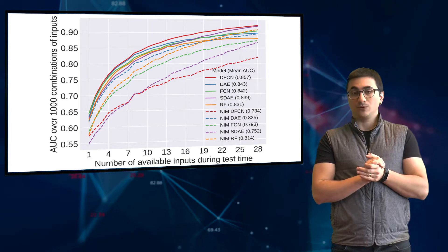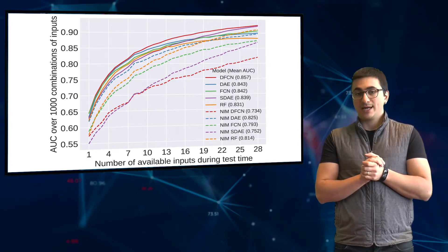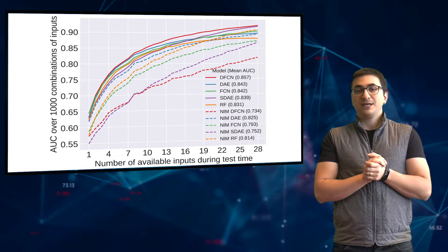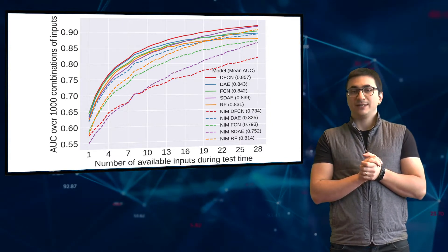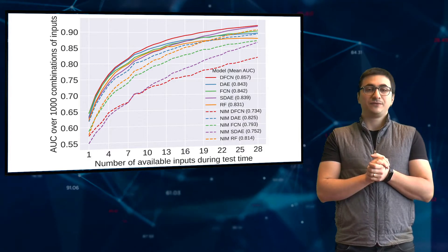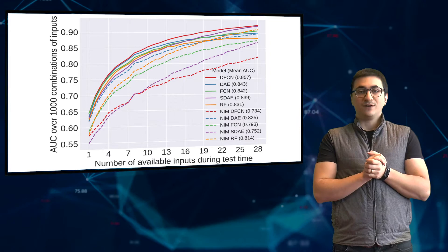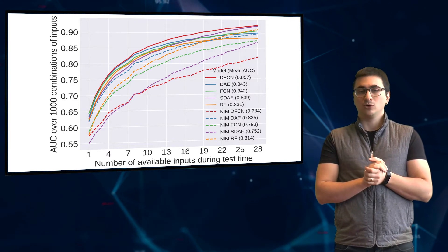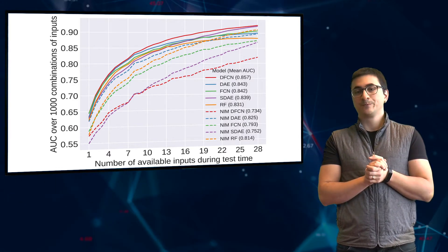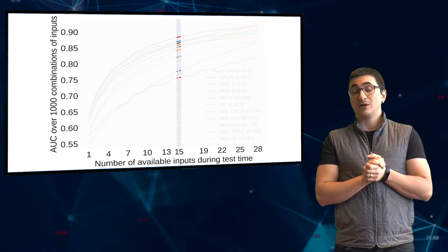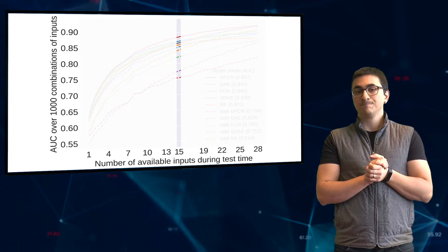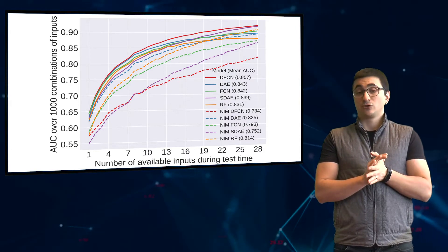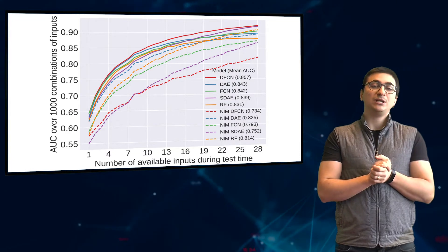All the dashed lines are much lower. We plot on the y-axis the area under the curve, which is the standard metric for performance for such tasks. If this value is 0.5, it means random guessing, and 1 means perfect classification. We plot the area under the ROC curve as a function of the number of input features available. What is plotted is the average over a very large number of random subsets of input features. For example, here you can see how the models perform when 15 of the 28 input features are available. Higher is better. The red chart is the network I propose — it works best. I call it DFCM: Denoising Fully Connected Network.